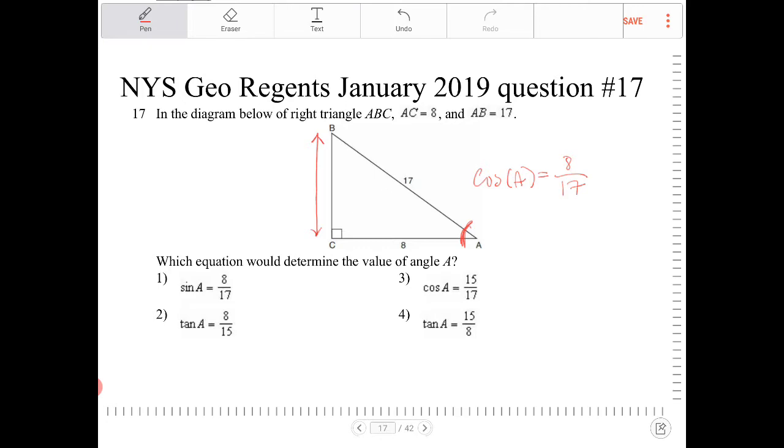To find out what that length is, because this is a right triangle, I can use the Pythagorean theorem because I know the two sides. Actually I'll start over. So if I call this H, I can say H squared plus 8 squared is equal to 17 squared. H squared is equal to 17 squared minus 8 squared. H is equal to the square root of 17 squared minus 8 squared.